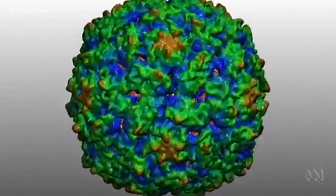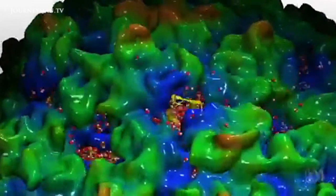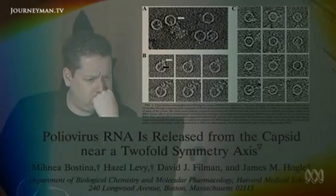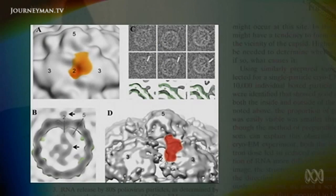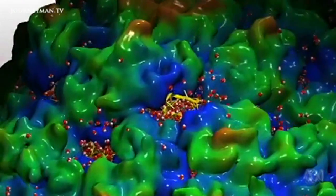Quite by accident, the simulation also revealed how a viral infection may occur. I noticed that the RNA — the genetic information — had actually started to squeeze out of a particular split in the virus. Around the same time, a group at Harvard University had published an in vitro observation showing that the RNA came out at a particular point of the virus under heating. When I went back to my model, I noticed that it fitted exactly what they'd observed.